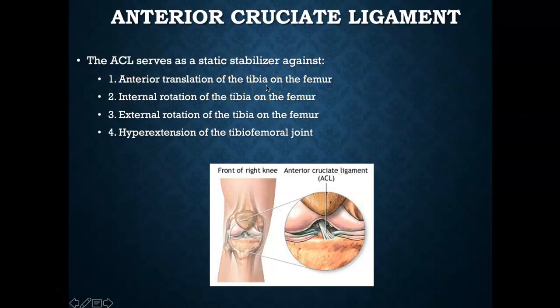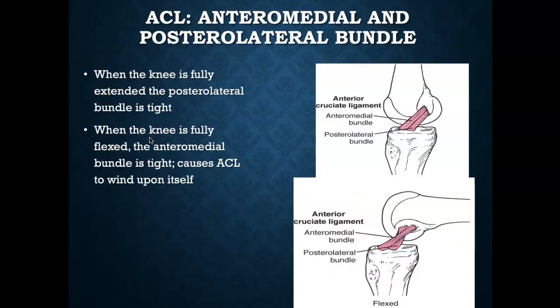With an ACL injury we see increased anterior translation, and depending on which bundle is torn, increased internal/external tibial rotation and potentially increased hyperextension — making it a massively unstable knee joint. This is why the ACL receives so much notoriety: it plays many roles in knee stability. Understanding the two bundles is important: in full extension the posterolateral bundle is taut; in full flexion the anteromedial bundle is tightest.